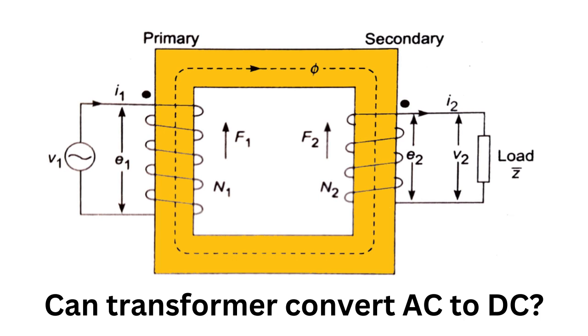DC, on the other hand, is the type of current that is used in batteries and some electronic devices.